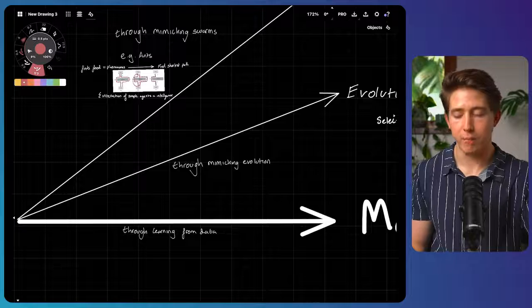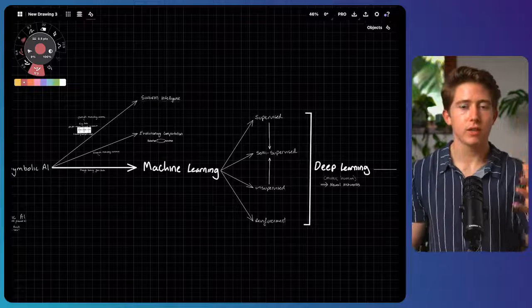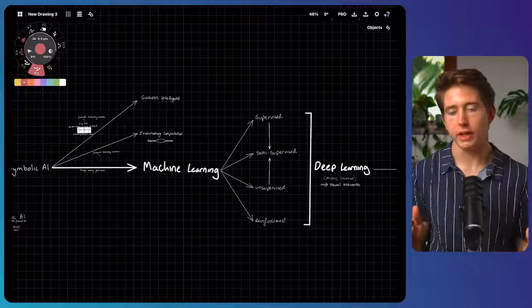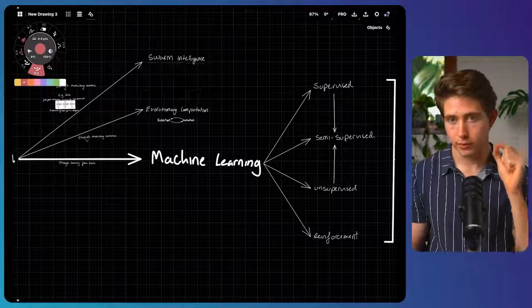And machine learning is when it emerges this intelligent behavior through learning from data. And so unlike the other two where they're mimicking processes, this is learning from data. And within the topic of machine learning, there are four different ways that a machine can learn from data.